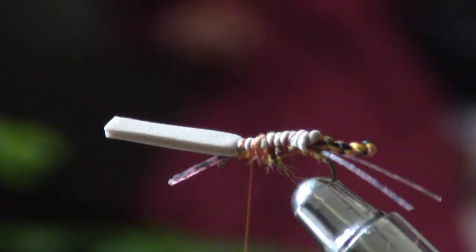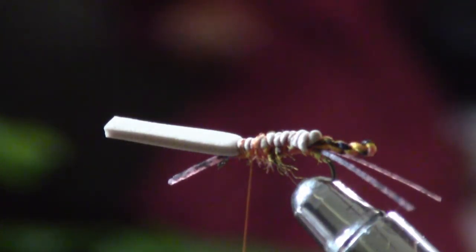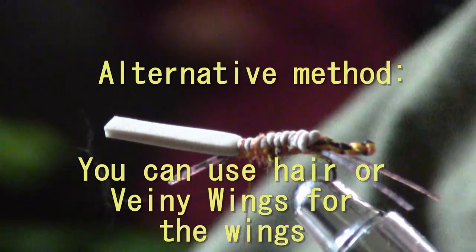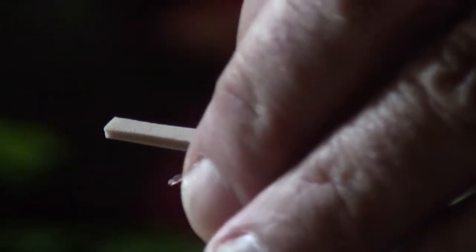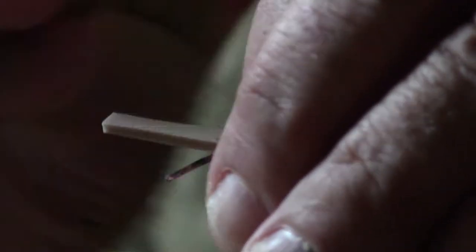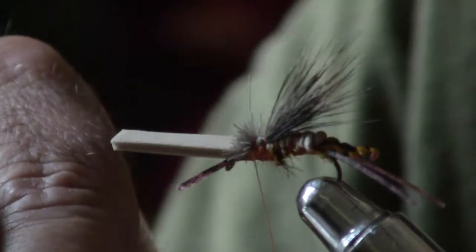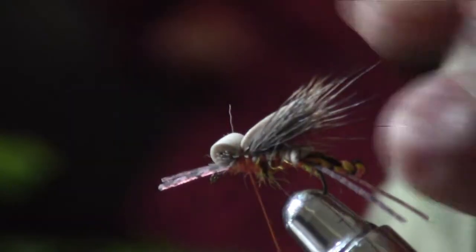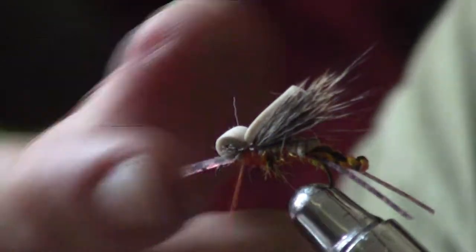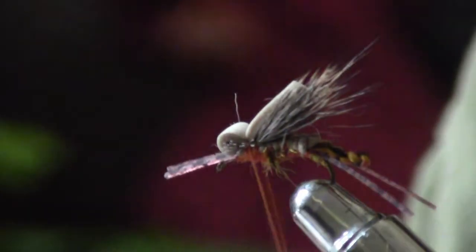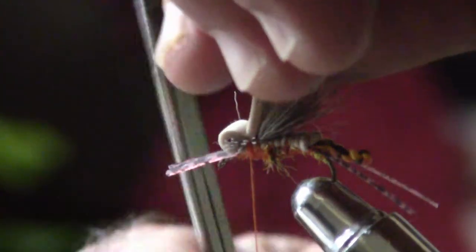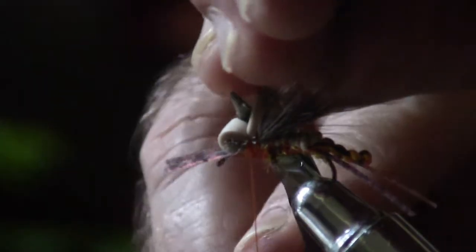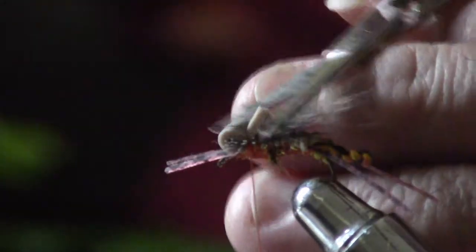The original fly calls for deer hair to be used for the wings. So cut off a little bit of this brown deer hair. Tie it up here. And then there's an alternative to the lacy wings. Actually, the original fly uses this. I'll trim that off.